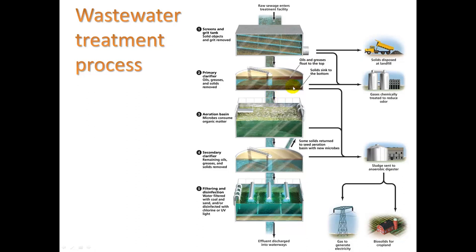The solid material collected during clarification goes into an anaerobic digester — a sealed building where oxygen is not coming in or out, and further decomposition occurs. This produces biosolids, which can be good fertilizer for cropland, though you must be careful because they can still contain trace chemicals or heavy metals from industrial processes. The anaerobic digester also produces methane gas, which can be used to generate electricity. Some solids from the grit process are also landfilled.